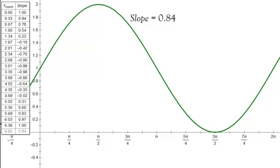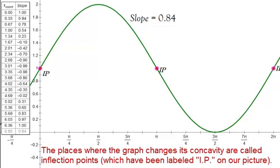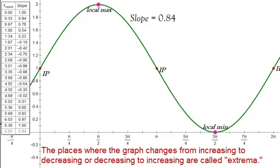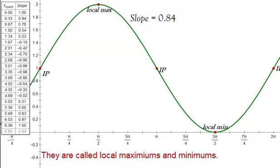Now the places where our graph changed concavity are called inflection points. Where our graph has gone from increasing to decreasing, or decreasing to increasing, are called extrema, and those are referred to as local minimums and local maximums.